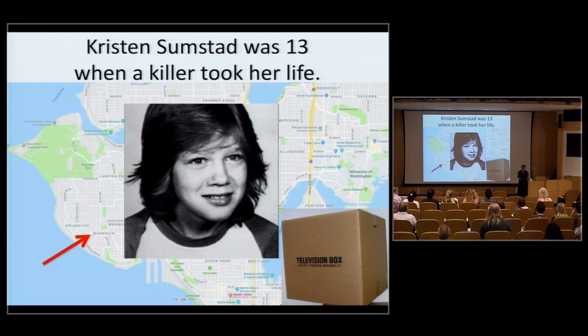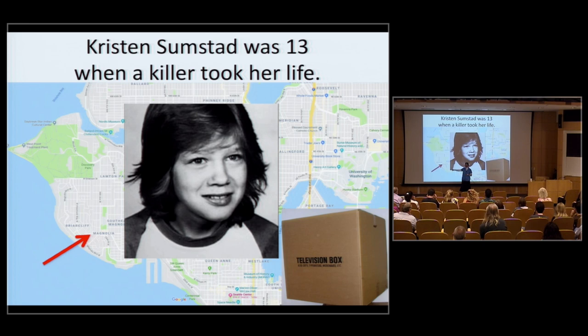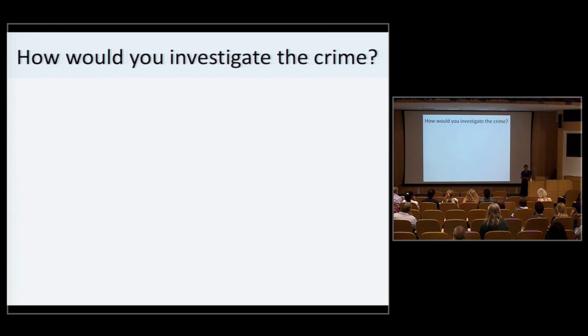Imagine a cold, dark November night in 1982, and you are chief of detectives for the Seattle Police Department. A call comes in — a child has been found in a cardboard box behind a TV repair shop in Magnolia. Your initial investigations show she was sexually assaulted and then strangled with a tie from a bathrobe. Her name is Kristen Sunstead, and she was only 13 years old. What would you do to investigate the crime?